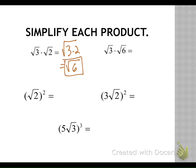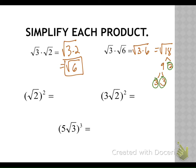Our next one we have square root of three times the square root of six, which is the same thing as the square root of three times six. Eighteen has factors that might have buddies, so we're going to look at it. Factors of eighteen — nine and two. Nine goes to three and three. I'm going to circle our leaves, the bottom of my branches. The ones that have buddies are just the threes. So the three comes out front. What doesn't have a buddy is the two — it stays locked up.